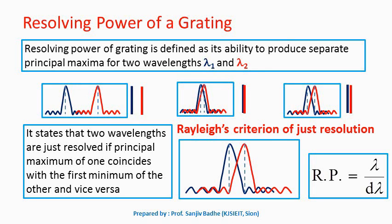If the spectral lines are merging with no gap between them, then we say that these spectral lines are not resolved — the wavelengths are not resolved. In such a case, the maxima corresponding to the particular spectral lines will be very close to each other, as shown here. We say the two spectral lines are just resolved if there is a very thin gap between the spectral lines.